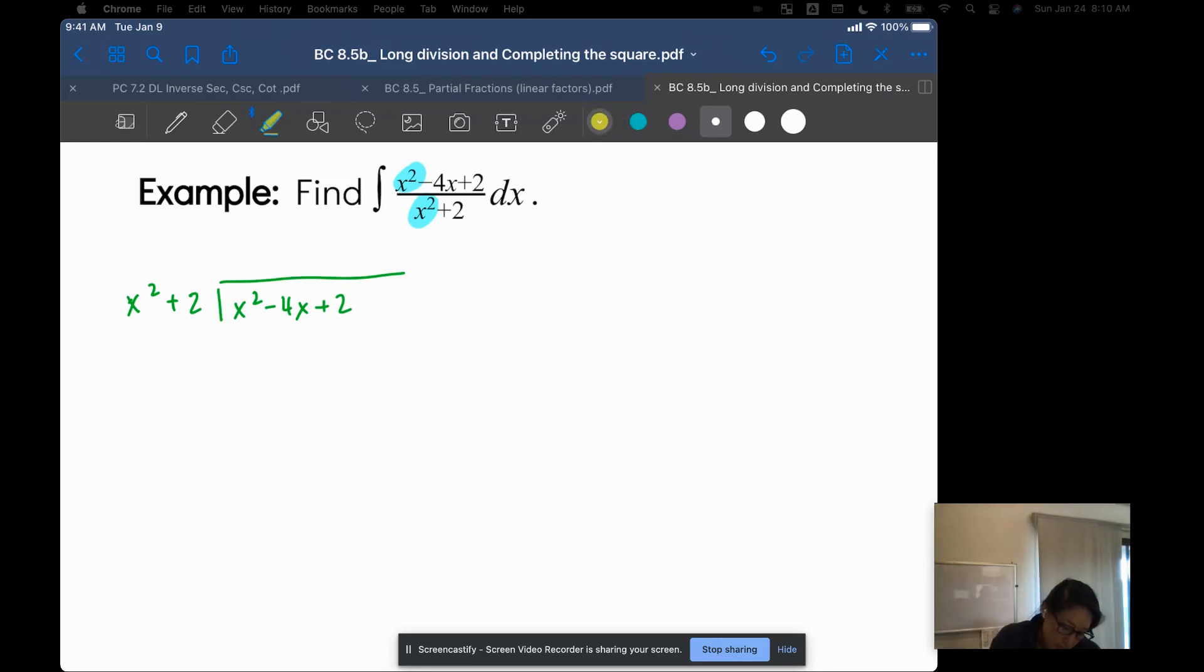If I use u substitution for x squared plus 2, it doesn't actually cancel enough stuff out, so we need to think creatively on how to split this up. So long division it is.